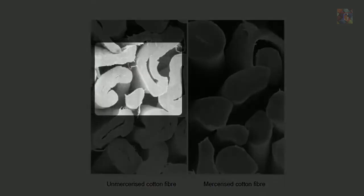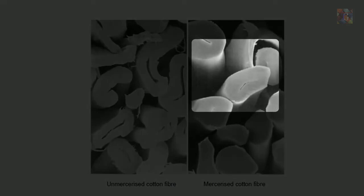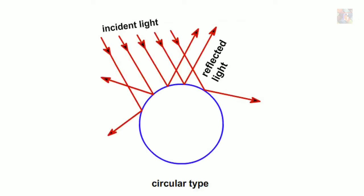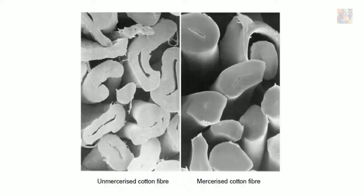Swelling of the fiber changes the cross section of cotton from a kidney shape to a circular shape, and this circular shape increases luster. When cotton fiber is mercerized, its strength increases by 10 to 50 percent, because a circular shape needs more force to break as compared to a kidney shape.